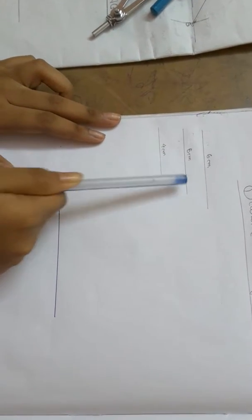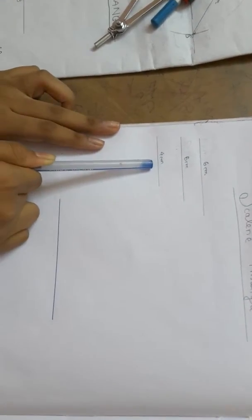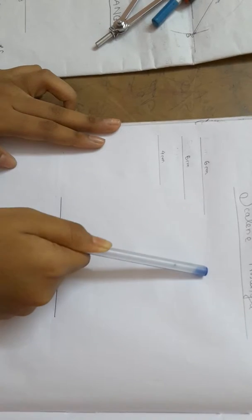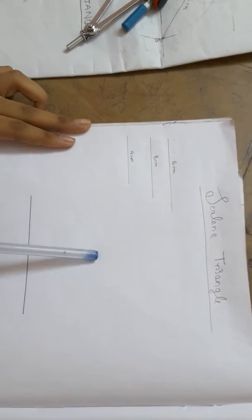First, you need to know there should be three measurements, like six centimeters, five centimeters, and four centimeters. A scalene triangle never has equal sides, so take any three different measurements.